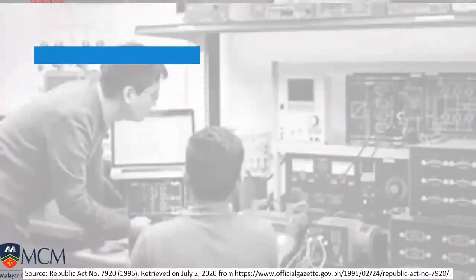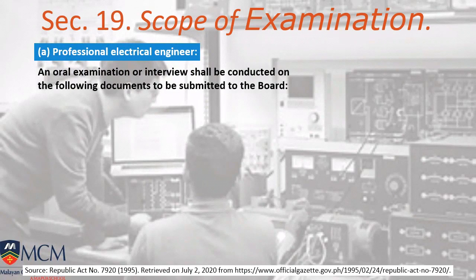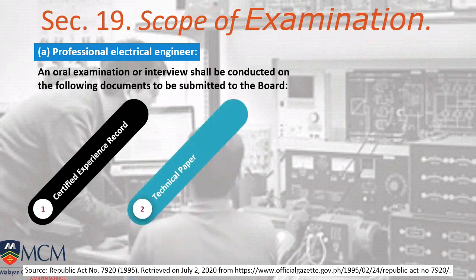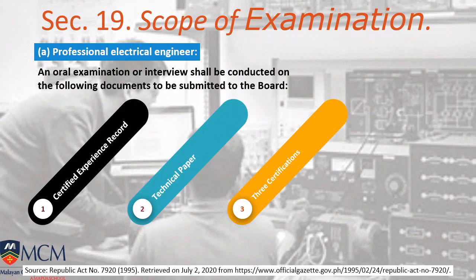Section 17 also covers the examination coverage for PEE. For PEE, it only requires an oral examination or interview with documents submitted to the board: number one is a certified experience record for 4 years or more; number two is a technical paper related to the field you are practicing — whether academia, construction, power, distribution, or any electrical field; and third is 3 certifications from the Board of Electrical Engineers.